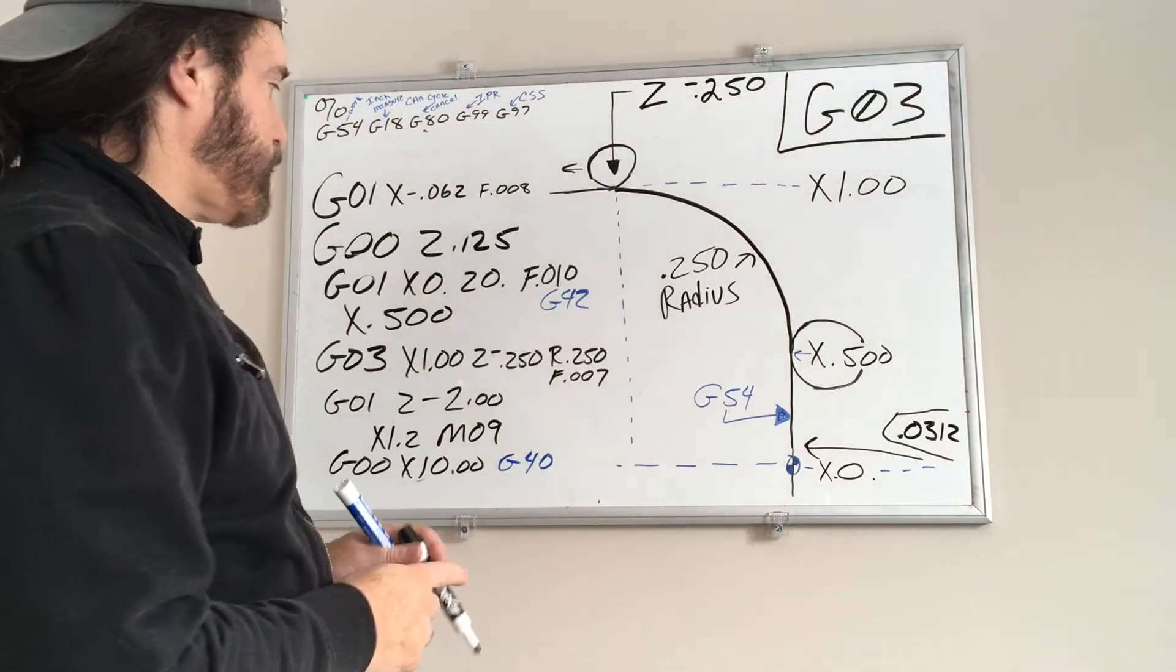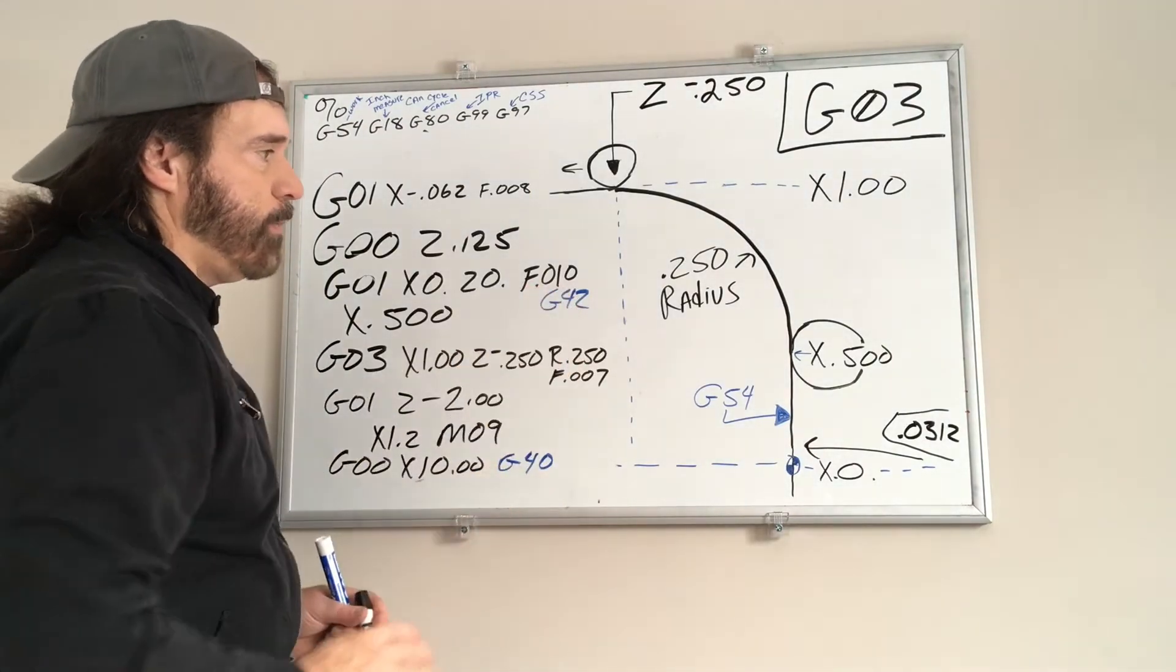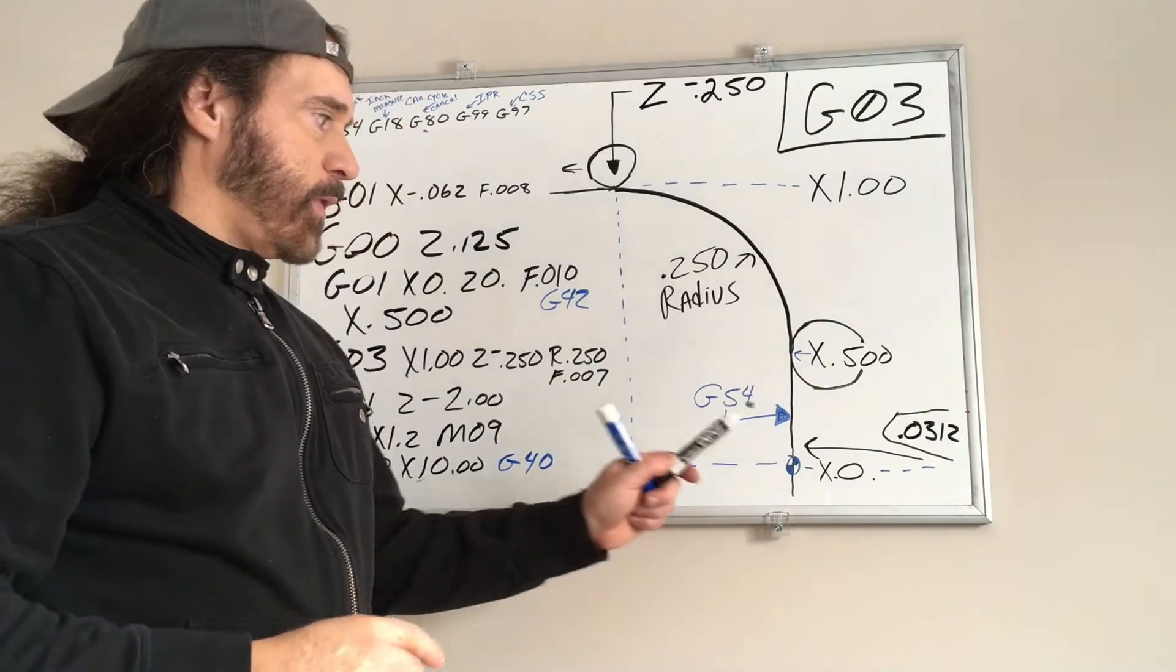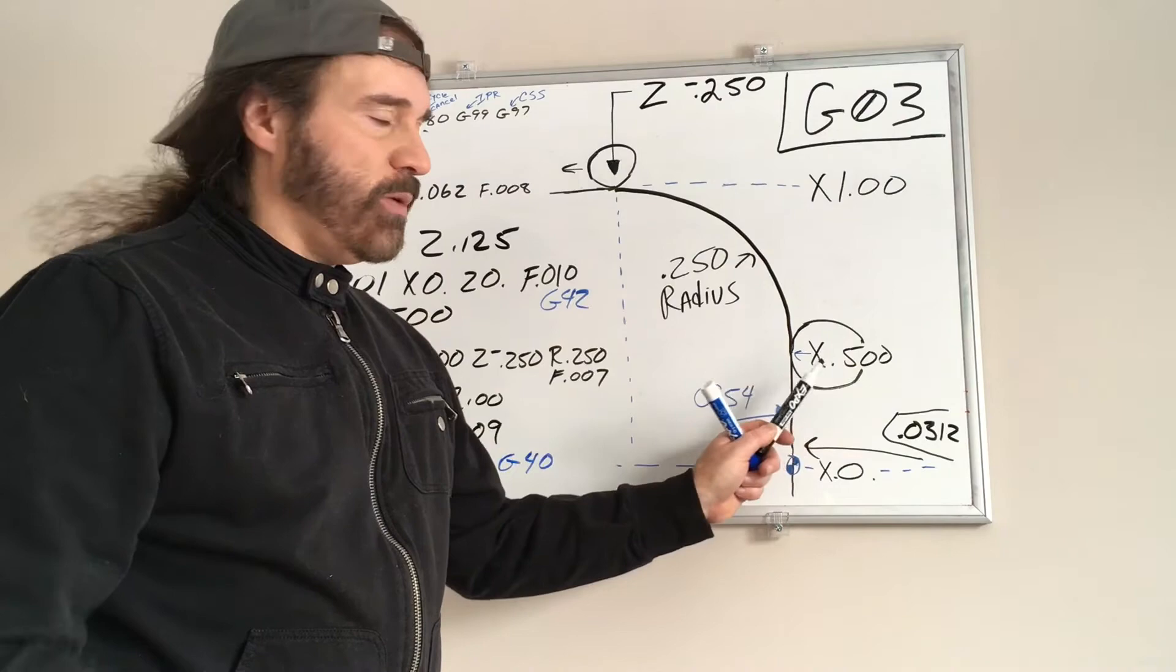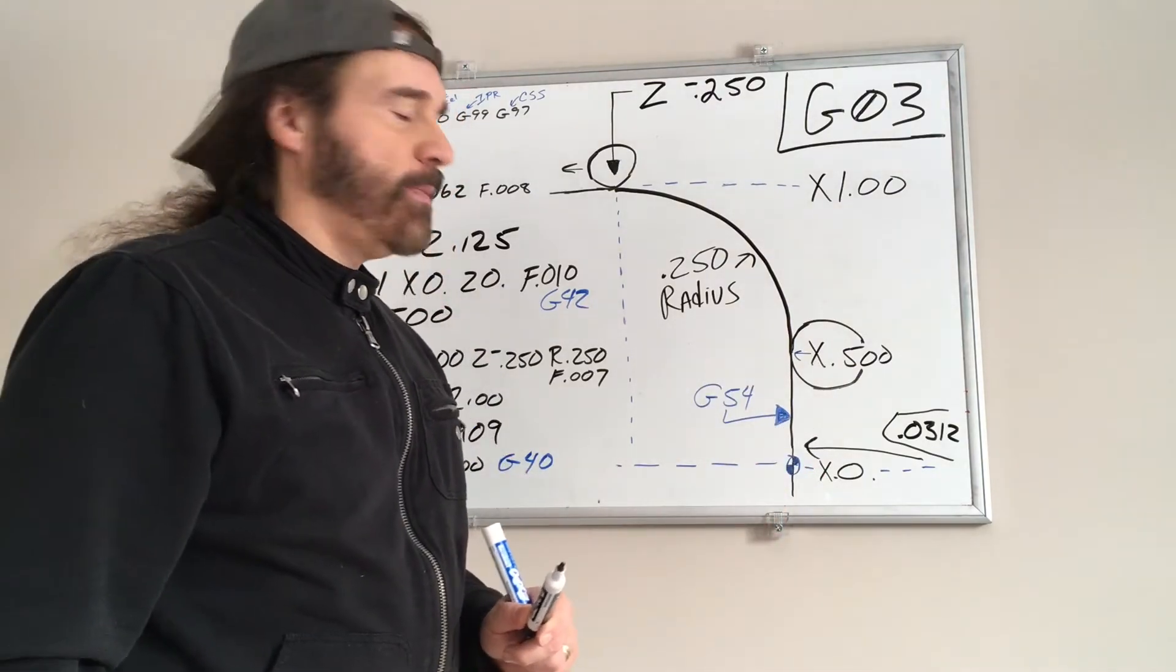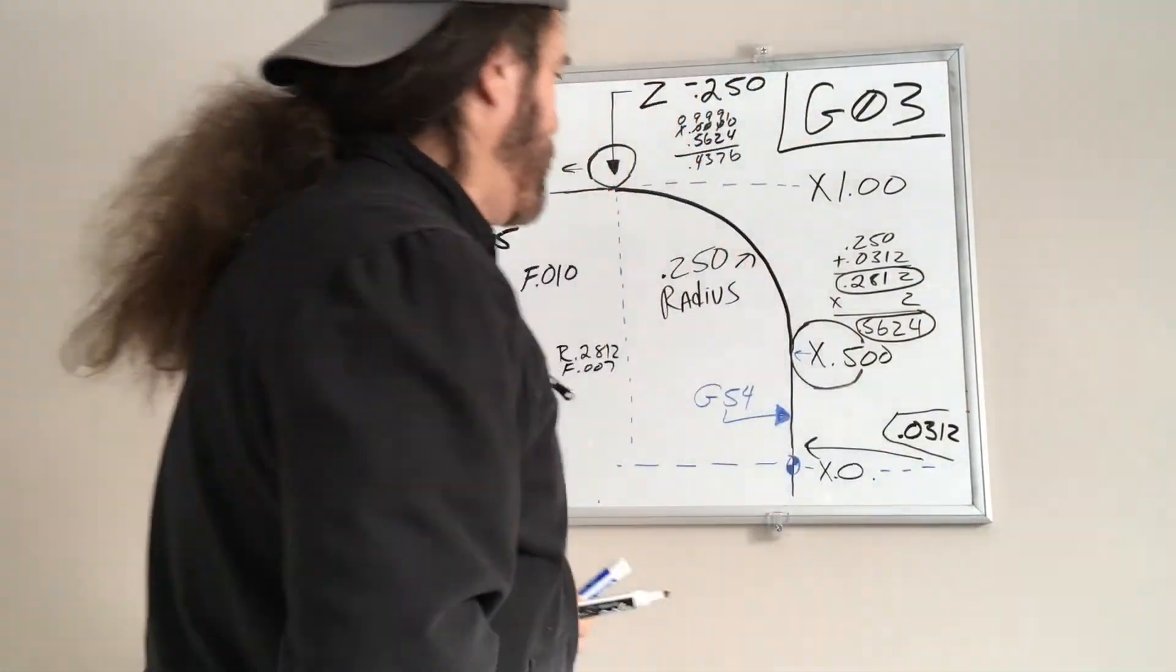So now what I'm going to do is I'm going to erase cutter comp for now. And if you were manually programming it, you have to compensate for the radius of the tooling bit. I'll be back. Bam! I'm back!